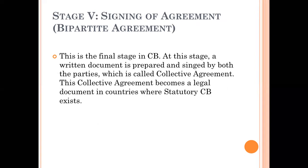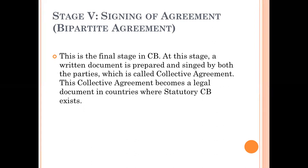Suppose that collective bargaining has succeeded — it means there is an agreement between the employer and the employee. This is the final stage in collective bargaining: signing of agreement. A written document is prepared and signed by both parties, which is called a collective agreement. This collective agreement becomes a legal document in countries where statutory collective bargaining exists. Some countries have a statutory collective bargaining process, whereas others do not.